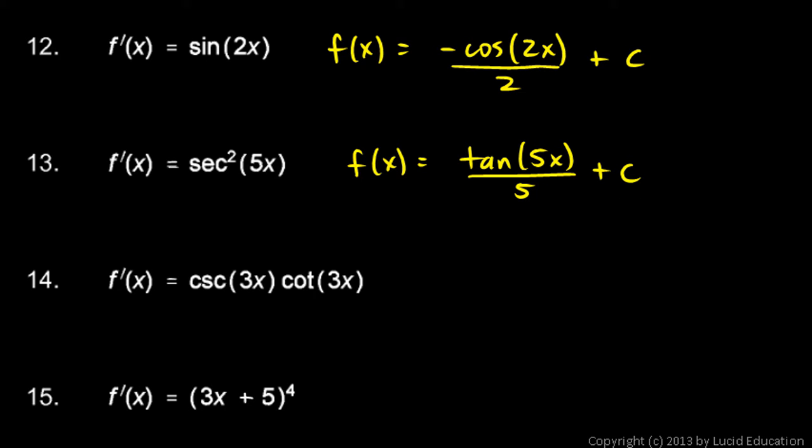Next one, f prime is cosecant 3x cotangent 3x. Alright, forget about the 3 for just a minute and think cosecant of this times the cotangent of this.